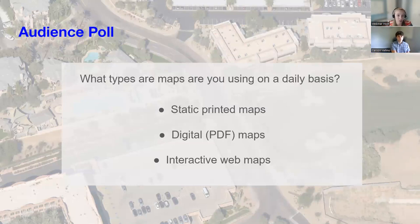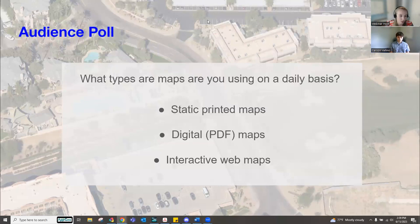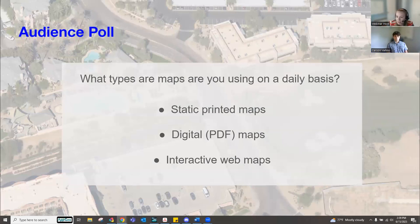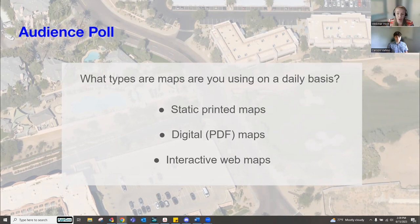We have one audience poll for you to fill out. We're curious to know what types of maps you're using on a daily basis — static maps, digital PDF maps, or interactive web maps. You should be able to identify if you're using one or all three. So far we're seeing that a lot of folks are using static maps, with digital and interactive maps trailing right behind. It's good to know people are still printing maps — it really depends on the use case, like trail maps that you want printed and at the kiosk, versus maps for town meetings that are fine as digital.